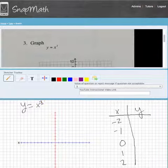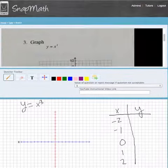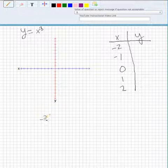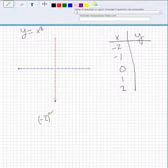The way we're going to graph this is by using a table. I've written the table out already. We're going to plug in negative 2 for x, so we're going to cube negative 2.